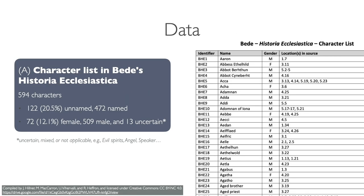The first data source was the character list in Bede's HE compiled by Hulner and her colleagues. It included over 500 characters. Roughly 20% of them are unnamed, like the aged priest you can see in the last item in the screenshot. And only a small fraction of them are female.